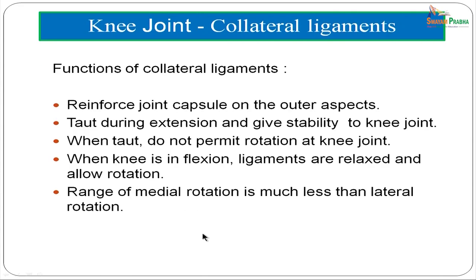The collateral ligaments reinforce the joint capsule on the outer aspects. They are taut during extension, giving tremendous stability to the knee joint and not permitting rotation. When the knee is in flexion, the ligaments are relaxed and allow a certain amount of rotation — the range of medial rotation being much less compared to lateral rotation.